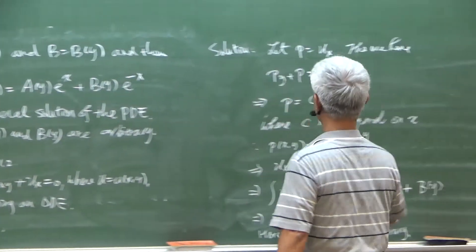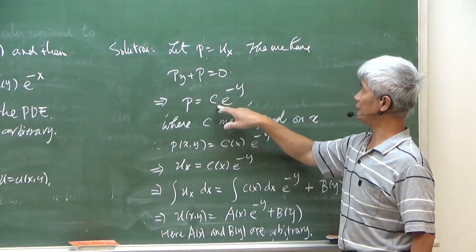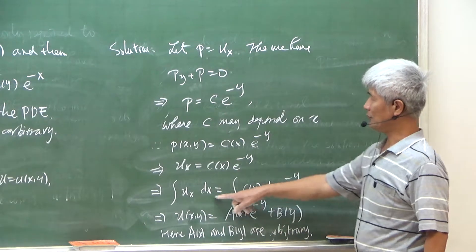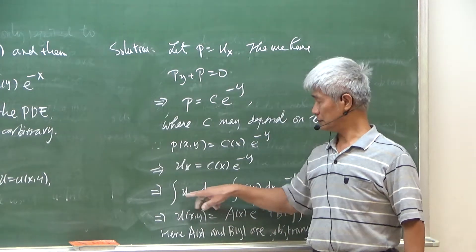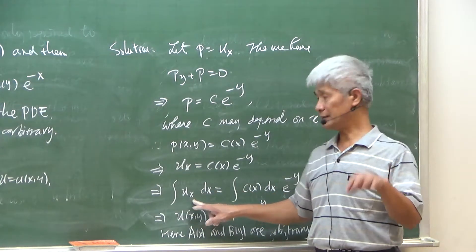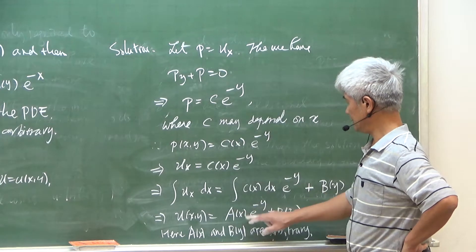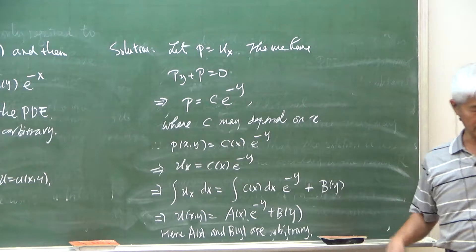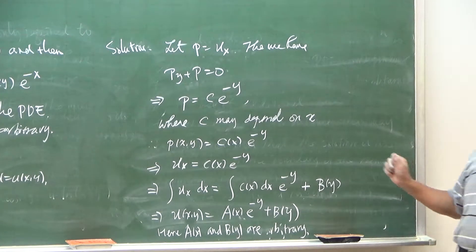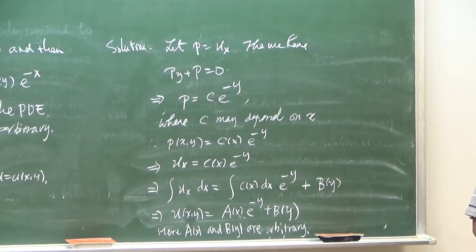For the second example, you got the ODE by fixing x. So the constant here should be a function that depends on x. When you integrate the derivative with respect to x, you fix y, so the constant of integration should be a function of y. Once you understand this idea, you can use ODE techniques to solve certain types of PDEs.